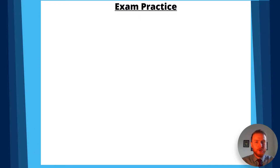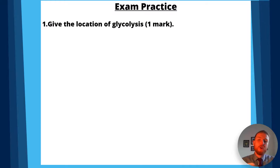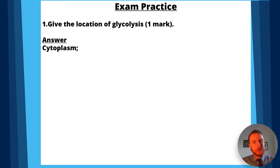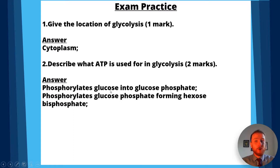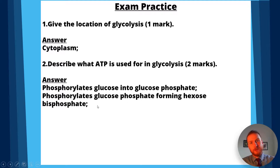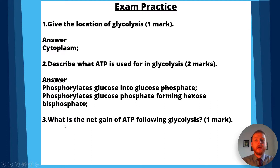Let's go through some exam questions. Question one: give the location of glycolysis. The answer is the cytoplasm. Question two: describe what ATP is used for in glycolysis. It phosphorylates glucose into glucose phosphate, and it phosphorylates glucose phosphate forming hexose bisphosphate. Question three: what is the net gain of ATP following glycolysis? The answer is two ATP.